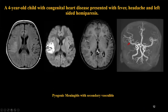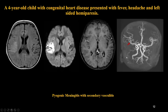This 4-year-old with congenital heart disease presented with fever, headache, and left-sided hemiparesis. Unlike developed countries where pediatric stroke is most commonly vasculopathic or inflammatory, in our country it is most commonly infectious. On the FLAIR image, there is hyperintensity along with diffusion restriction in the territory of insular branches involving the posterior insula. Post-contrast shows enhancement along the right sylvian fissure. MR angiogram, which I always perform in meningitis patients, shows irregularity in the insular branches of the right MCA — a case of pyogenic meningitis with secondary vasculitis, which is not uncommon even in pyogenic meningitis.